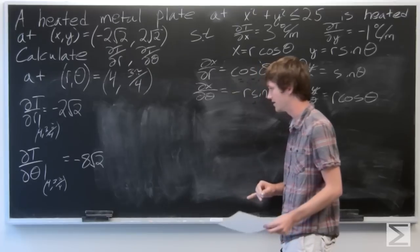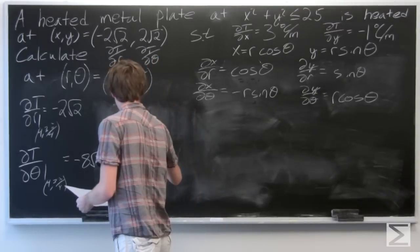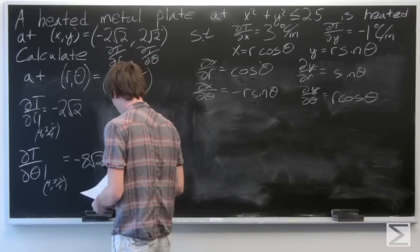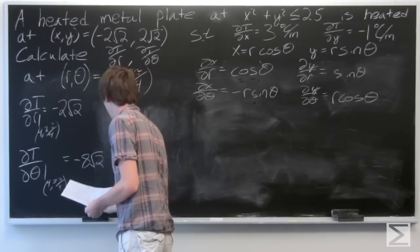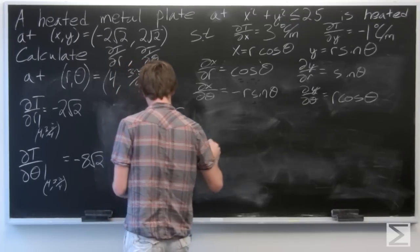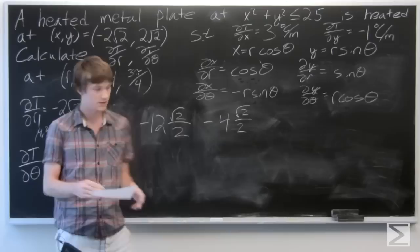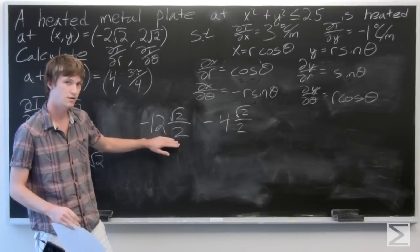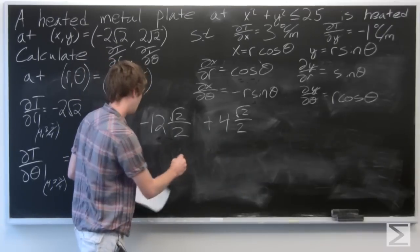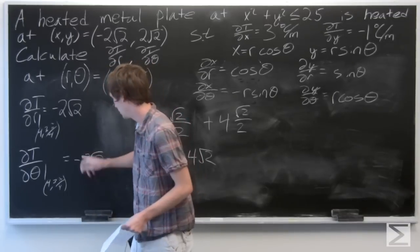Actually, I just realized I took the cosine wrong, so I'm going to correct that. Looking back at our dT/dθ, the cosine term should actually produce a plus 4, so that brings our total to -4√2 rather than -8√2.